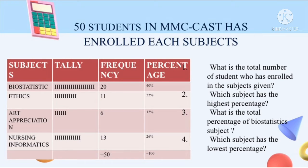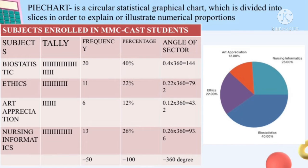Which subject has the lowest percentage? Looking at the lowest number, it is 22% in art appreciation. Now I will teach you how to construct a pie chart. A pie chart is a circular statistical graphical chart which is divided into slices in order to illustrate numerical proportions. The total percentage should be 100% and the total arc measure should be 360 degrees.